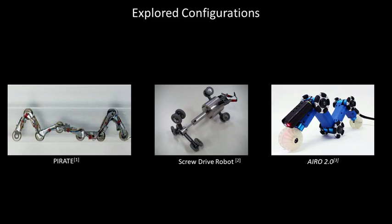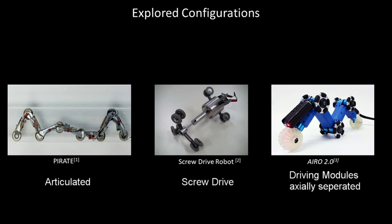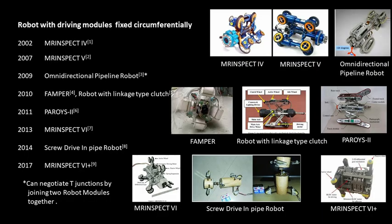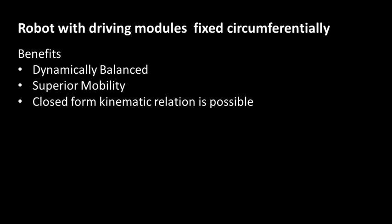There have been many research efforts towards the development of a robot for in-pipe locomotion. Many configurations like the articulated snake type where driving modules are axially separated have been developed. Configurations with separate driving and steering mechanisms have also been explored. The robot configuration with three driving modules fixed 120 degrees apart circumferentially have been extensively researched and our work focuses on these robots. These robots are dynamically stable, have superior mobility and close form kinematic relation can be easily derived for such a configuration.